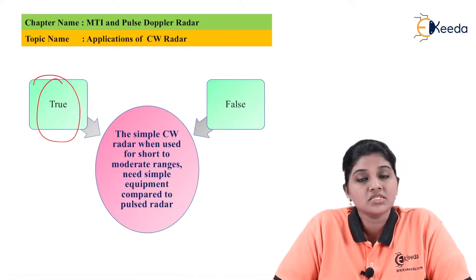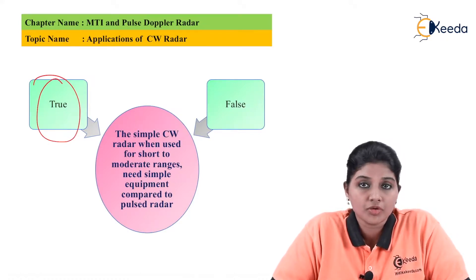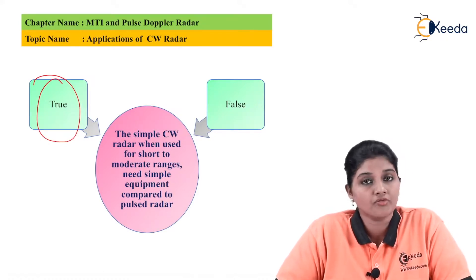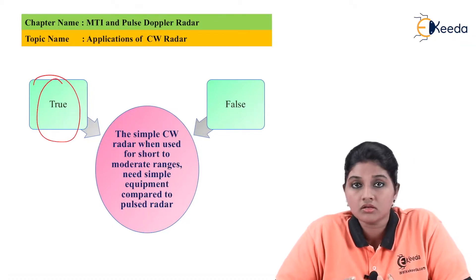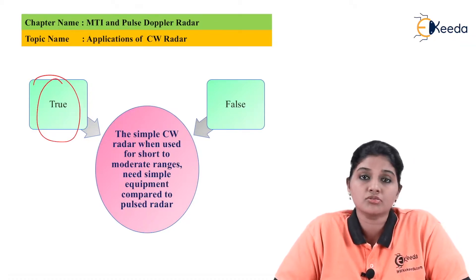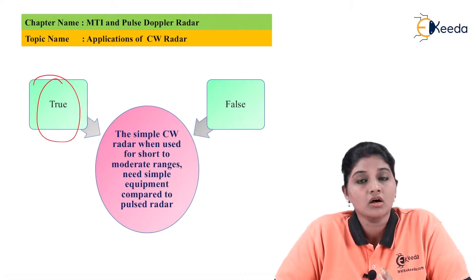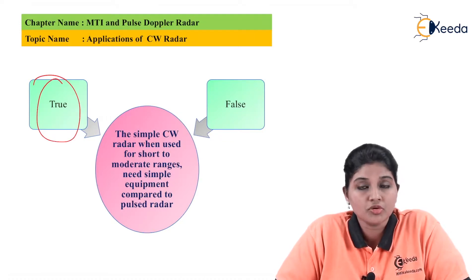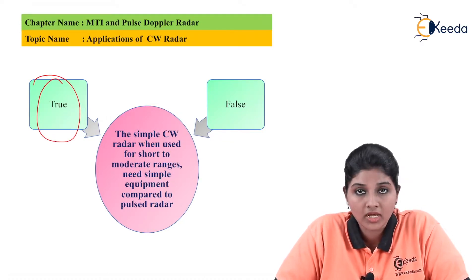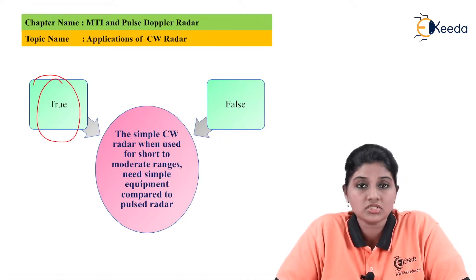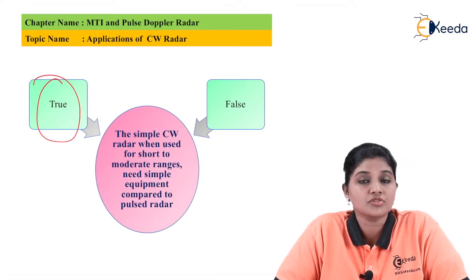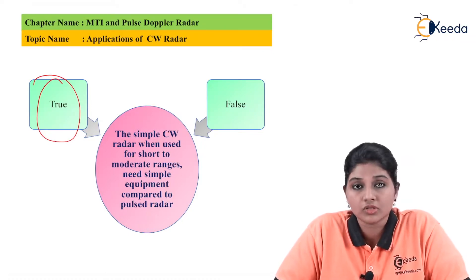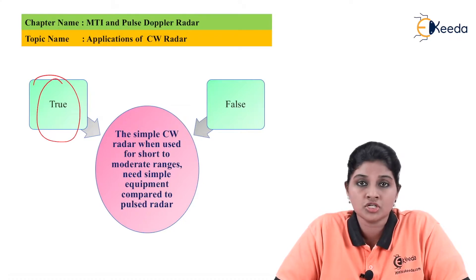So these are the basic applications of the continuous wave radar system, including aircraft maintenance systems, general purpose applications such as oil and air exploration systems, and non-contact measurement. I hope you understand this topic of applications of simple continuous wave radar. Thank you very much for watching this video. Stay tuned to Ekeeda, subscribe to Ekeeda. Thank you.